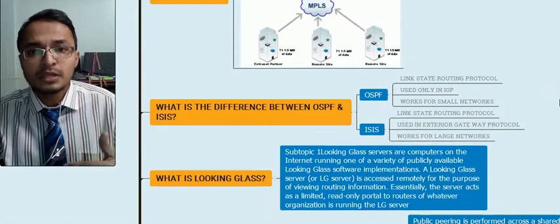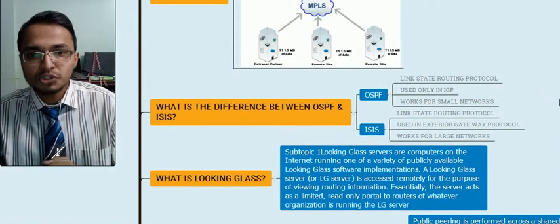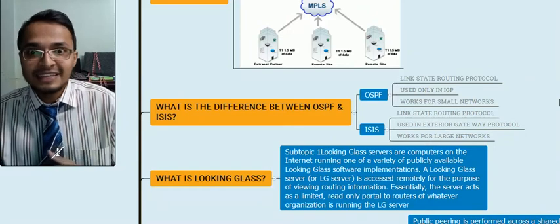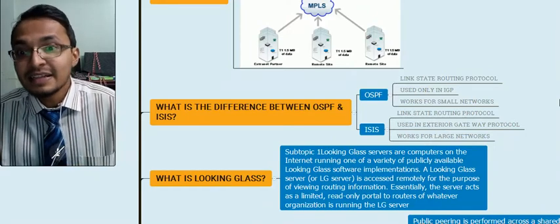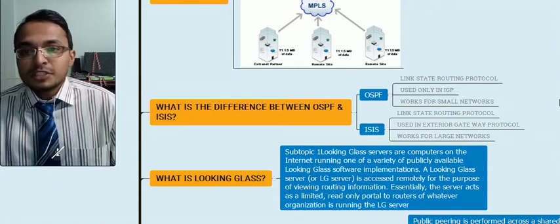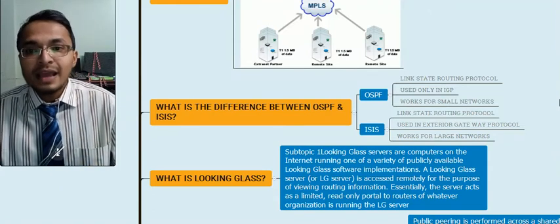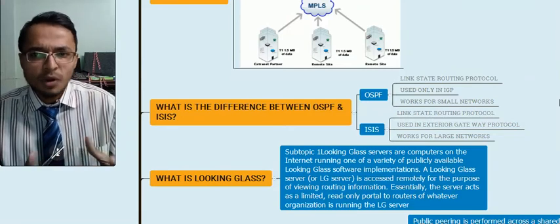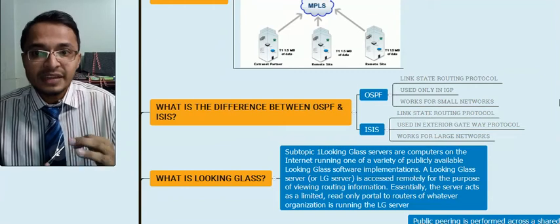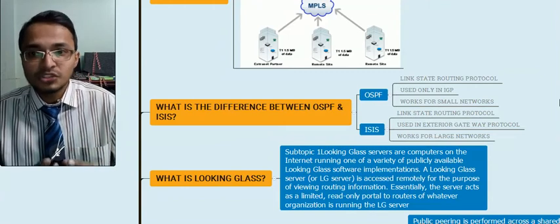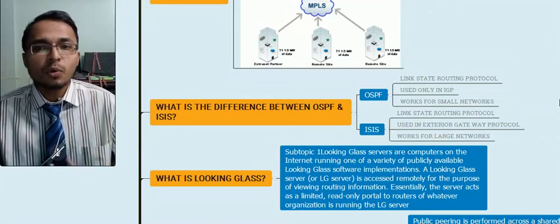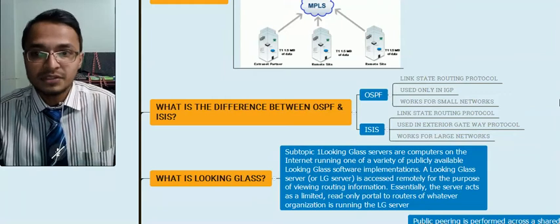The next question is: what is the major difference between OSPF and IS-IS? OSPF stands for Open Shortest Path First — it is a link state routing protocol used in interior gateway protocols for smaller networks. IS-IS is used for larger networks and is also a link state routing protocol, typically associated with exterior or large-scale deployments.